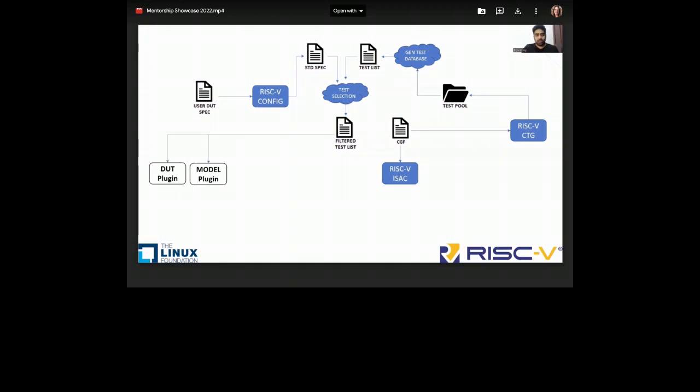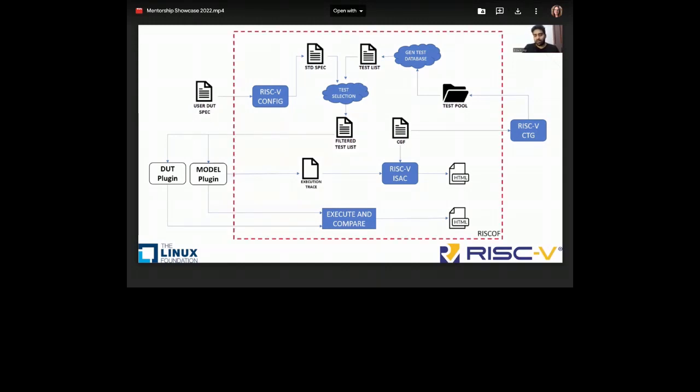The framework uses those test files to generate a test list. Using the specification of the DUT, it filters out the tests which actually matter. We have the cover group format file, which has all the different cover groups and cover points which are to be covered through this test. That is passed into ISAC, which helps us calculate the coverage statistics. The filter test list, all those assembly files which have passed, will be run on both the DUT and the model.